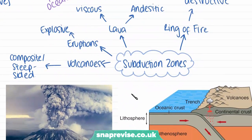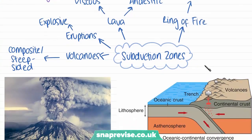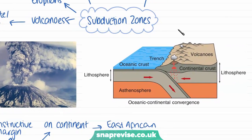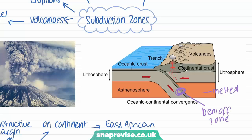We also have volcanoes occurring at subduction zones. Subduction zones are where one type of crust is being subducted beneath the other, as shown in this diagram — our oceanic crust, which is denser than continental crust, being subducted beneath it. When the oceanic crust is subducted, it becomes melted again in the mantle at a point called the Benioff zone. When this crust is melted, it turns back into magma and, being relatively light, is able to rise back up through the continental crust, as shown here by these little red dots, and it reaches the surface and forms a volcano.